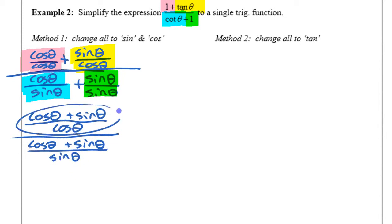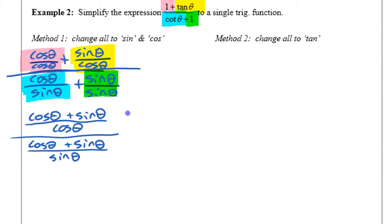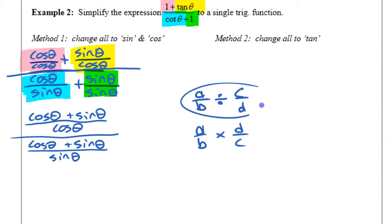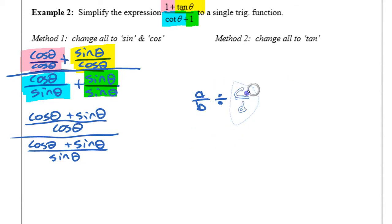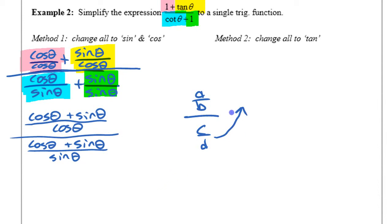So I have this fraction divided by this fraction. When you have two fractions — a over b divided by c over d — you can change it to multiplying by d over c instead of dividing by c over d. Whether the division is written in a horizontal format or with a fraction below, it's the same thing. You can multiply by the reciprocal instead of dividing.